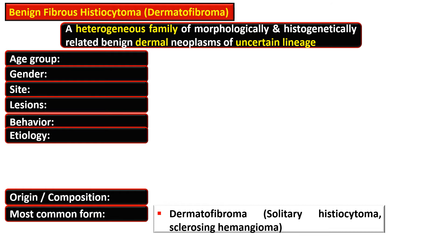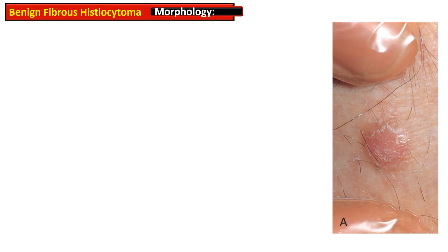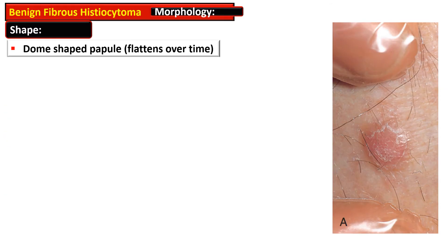The most common form of benign fibrous histiocytoma is dermatofibroma, also named solitary histiocytoma or sclerosing hemangioma. The main differential diagnosis of this lesion is melanoma, particularly when it is pigmented.